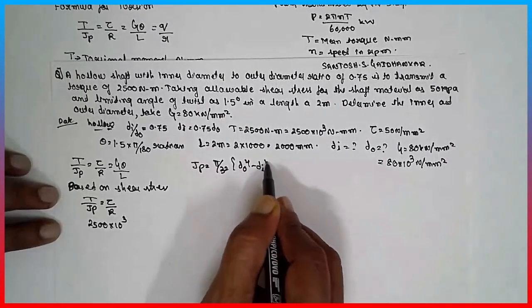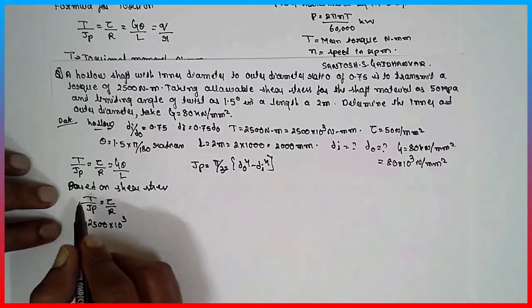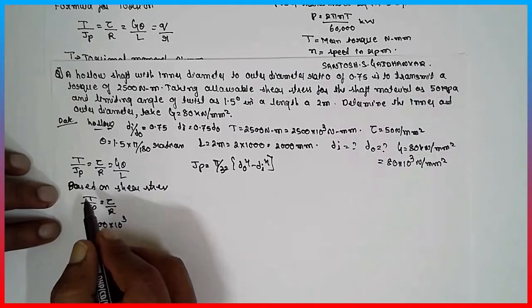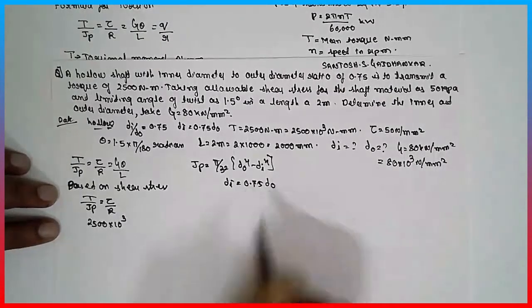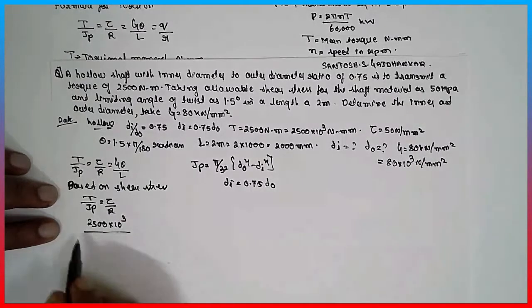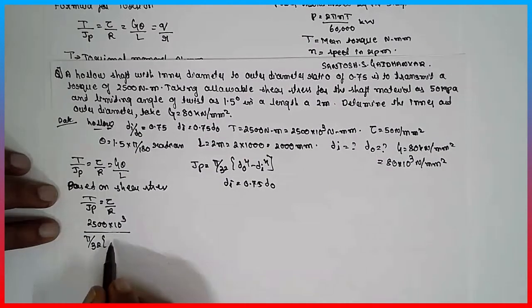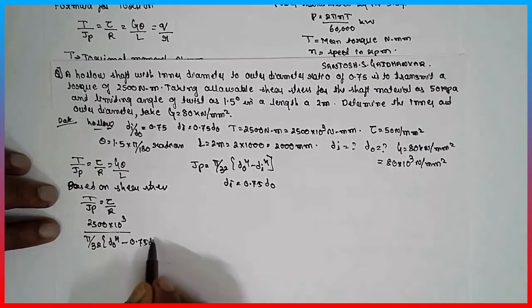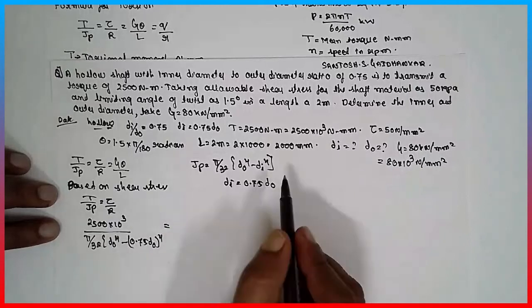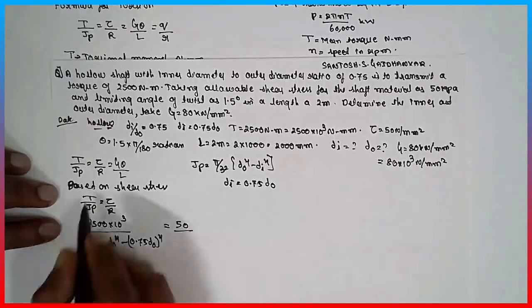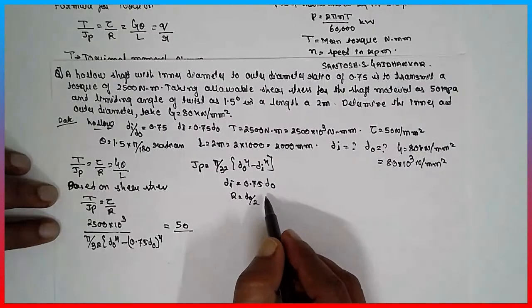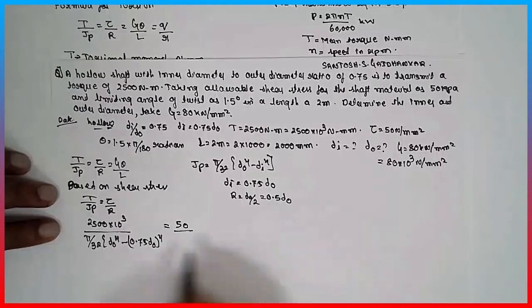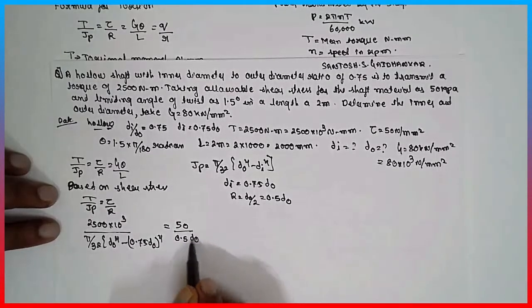Jp equals pi/32 times (Do⁴ minus Di⁴) — the polar moment of inertia for a hollow shaft. The condition given is Di = 0.75 Do. Substituting: pi/32 times (Do⁴ minus (0.45·Do)⁴). R is nothing but Do/2, i.e., 0.5·Do.